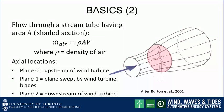First, plane 0, which is upstream of the wind turbine — that would be the wind undisturbed by the wind turbine. Plane 1, which is the plane swept by the wind turbine blades. Plane 2, downstream of the wind turbine. We'll talk about the different cross-sectional areas at the three planes in a moment.